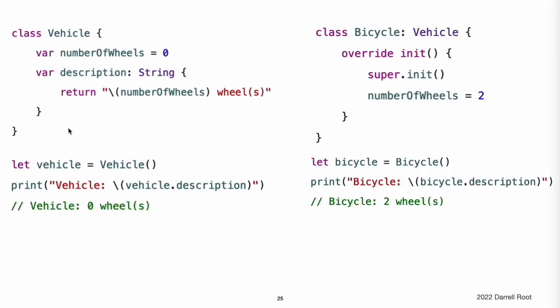This example defines a base class called Vehicle. This base class declares a stored property called numberOfWheels with the default Int value of 0. The numberOfWheels property is used by a computed property called description to create a string description of the vehicle's characteristics. The Vehicle class provides a default value for its only stored property and does not provide any custom initializers itself. As a result, it automatically receives a default initializer, which is always a designated initializer for a class and can be used to create a new Vehicle instance with a numberOfWheels of 0.